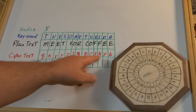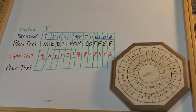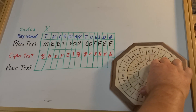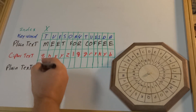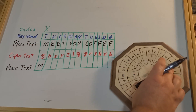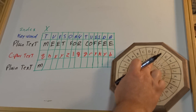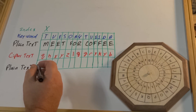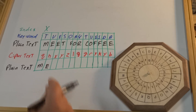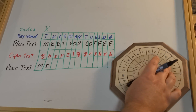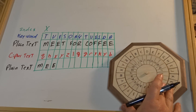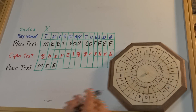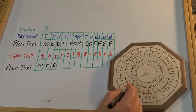I find one of the easiest things to do is write out the cipher text and then write out my keyword over it — it helps make sure everything is aligned. So I can set X to T, look for Q, and it is M. Then we set X to U, look for H, and it is E. Then we set X to E, look for X — of course that is E. We set X to S, look for Y on the inner ring, and that is T.